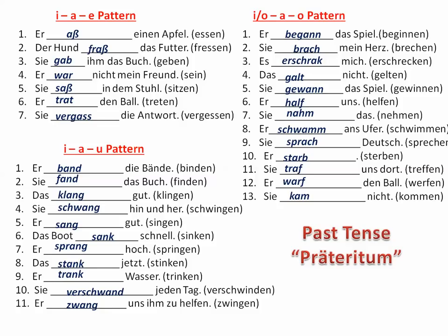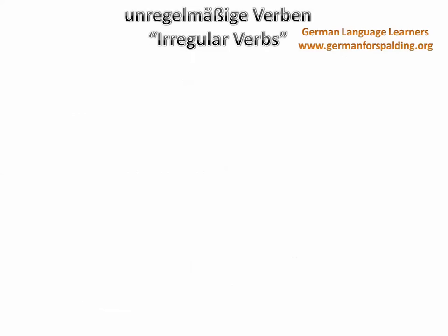Again, we are looking at the third person singular in the simple past. One note about the simple past in German: it's more likely to be written than said, although with modal verbs and certain verbs you will hear the simple past form quite frequently — for example, war.